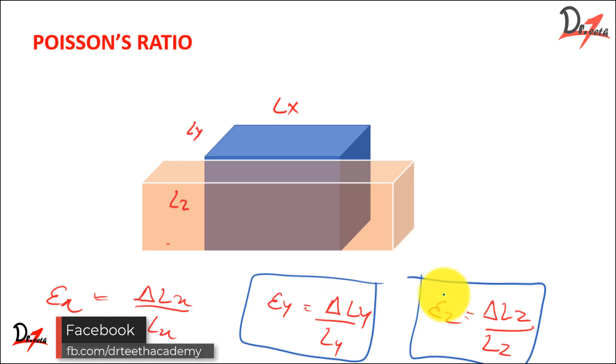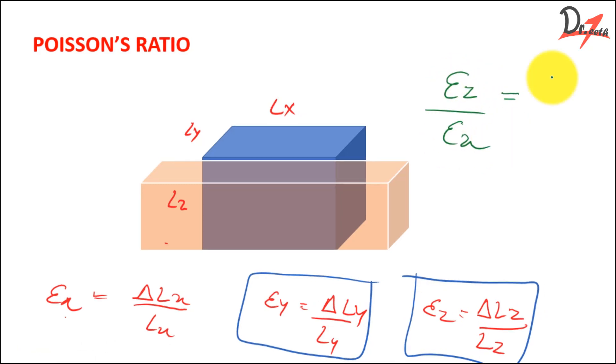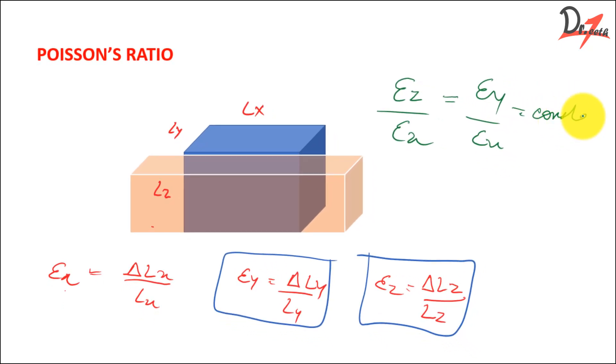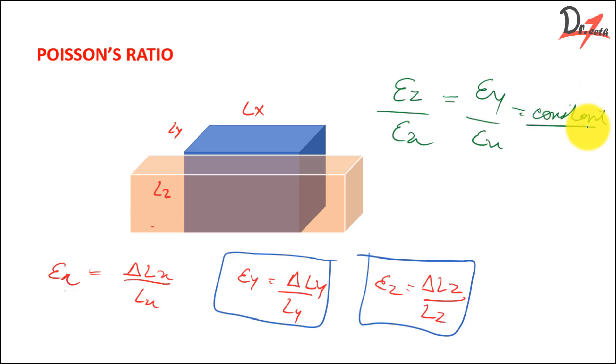Now if we take out the ratio of this with this and this y-axis with this, this will be a constant. This will be a constant and that is the Poisson's ratio. So this is constant and it is denoted by a Greek letter mu and what is this? This is our Poisson's ratio.